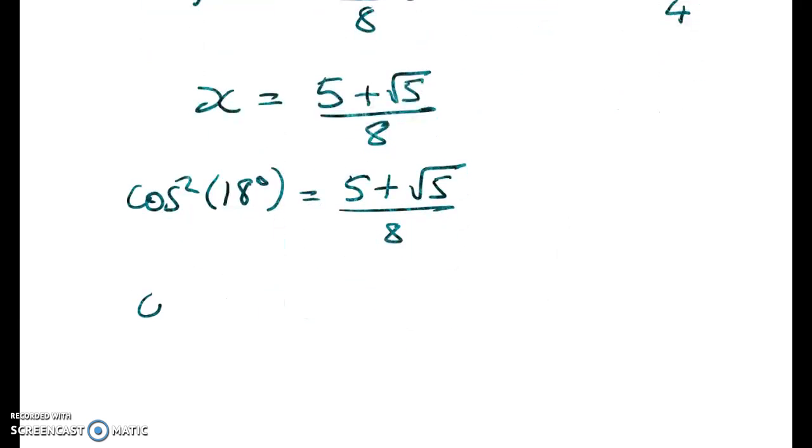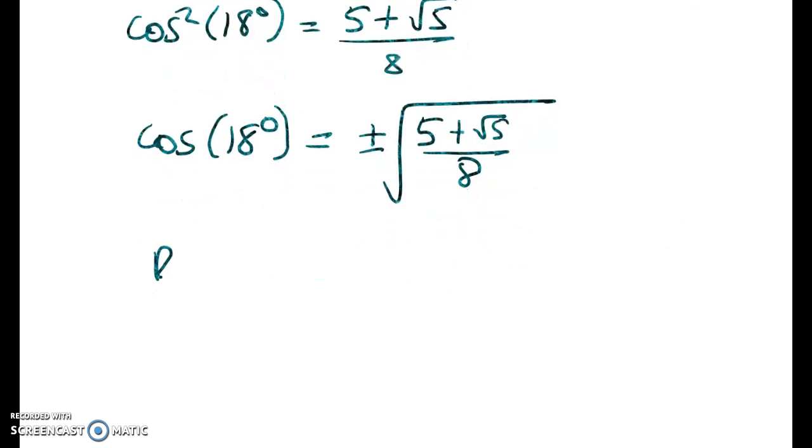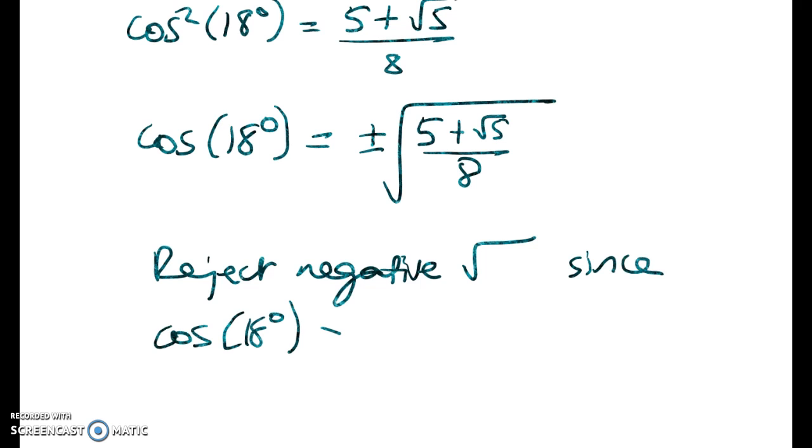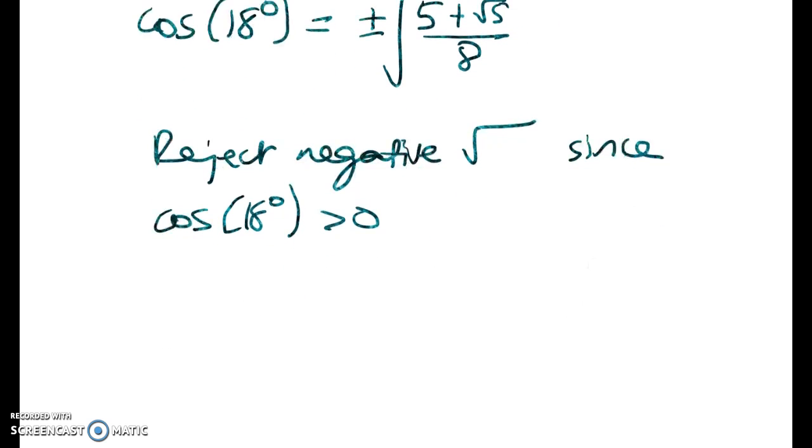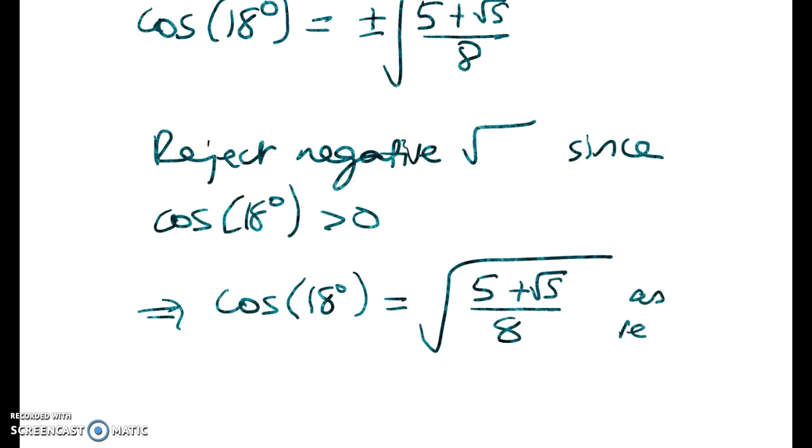But we want cos of 18. So again, it could come from plus or minus that, but we know that it's positive. So we reject the negative square root, since cos of 18 is greater than 0. So that gives me cos of 18 degrees is equal to the square root of 5 plus root 5 on 8, as required.